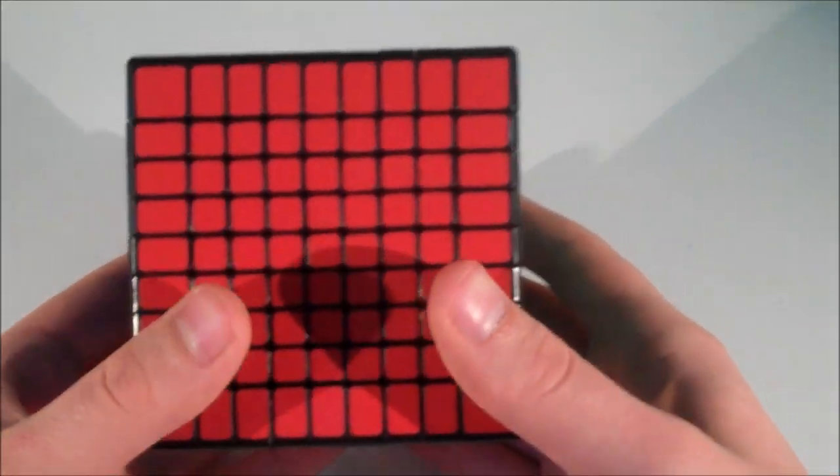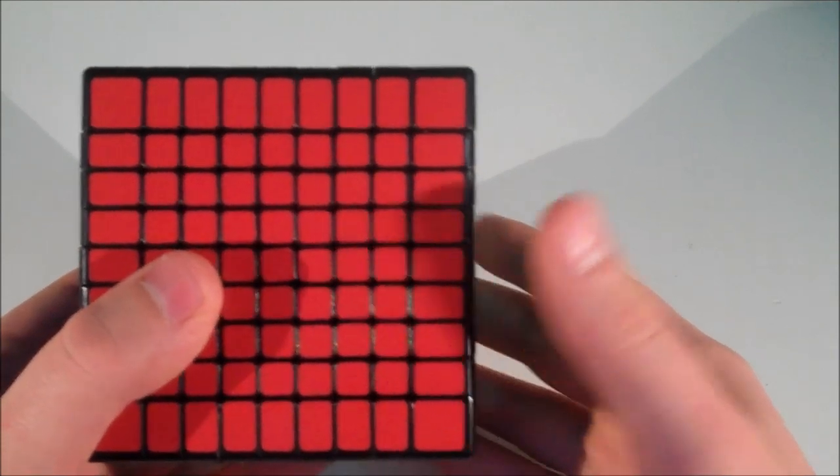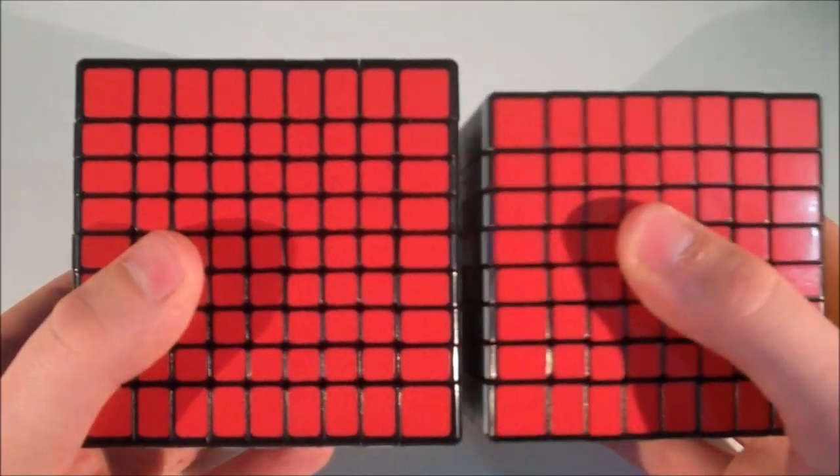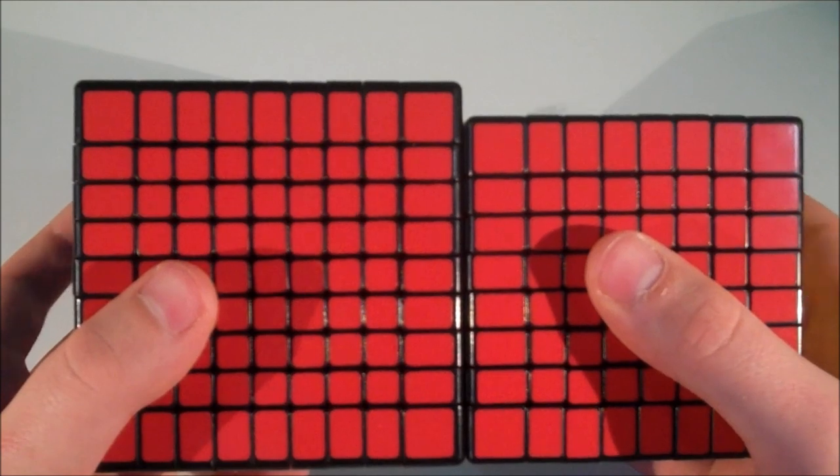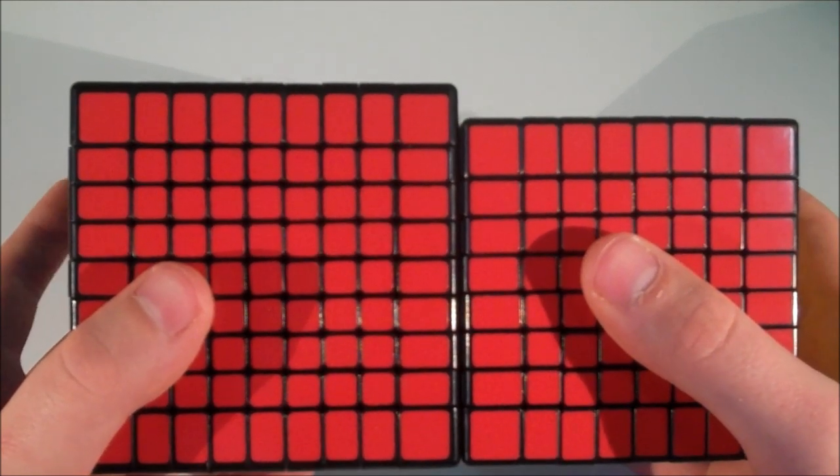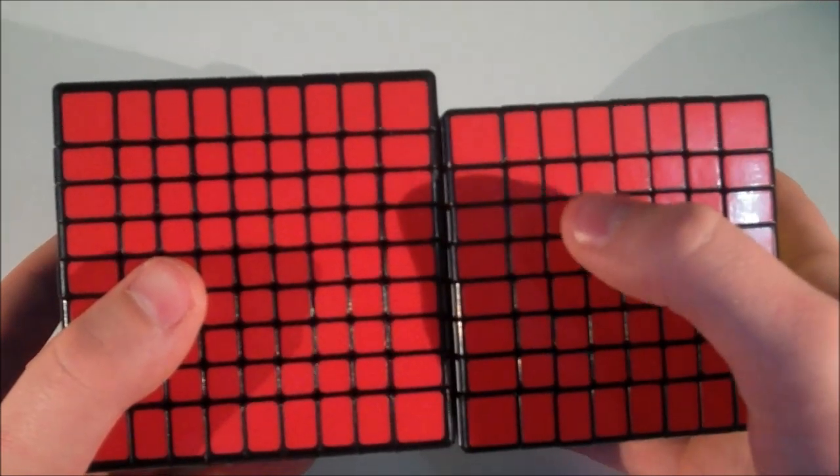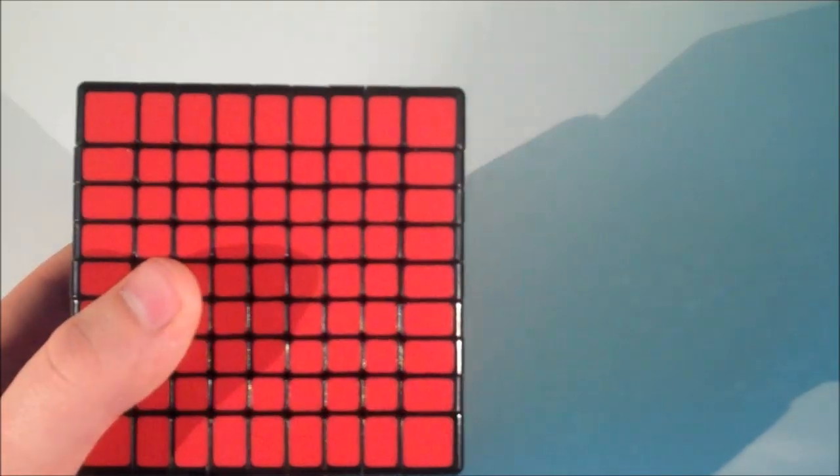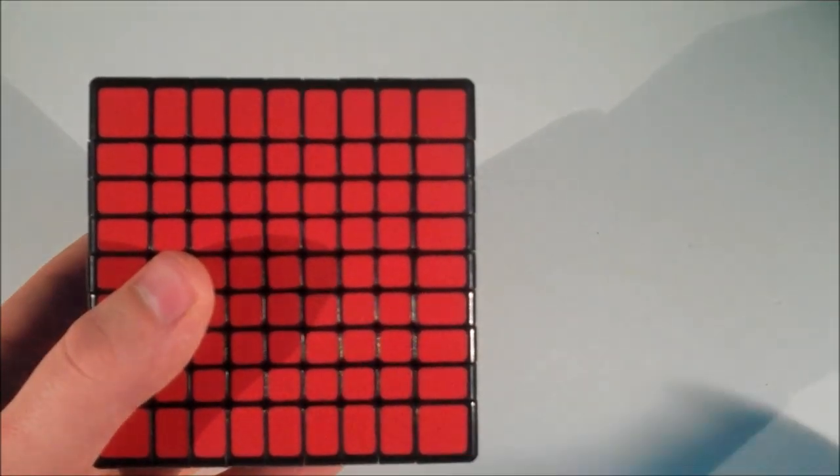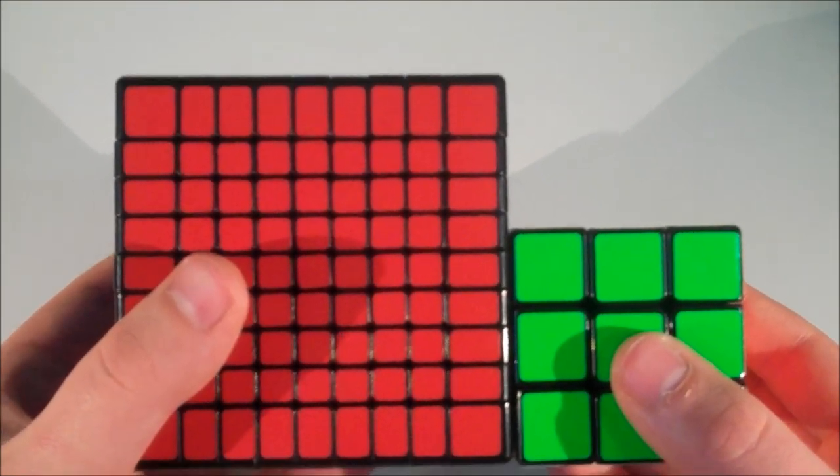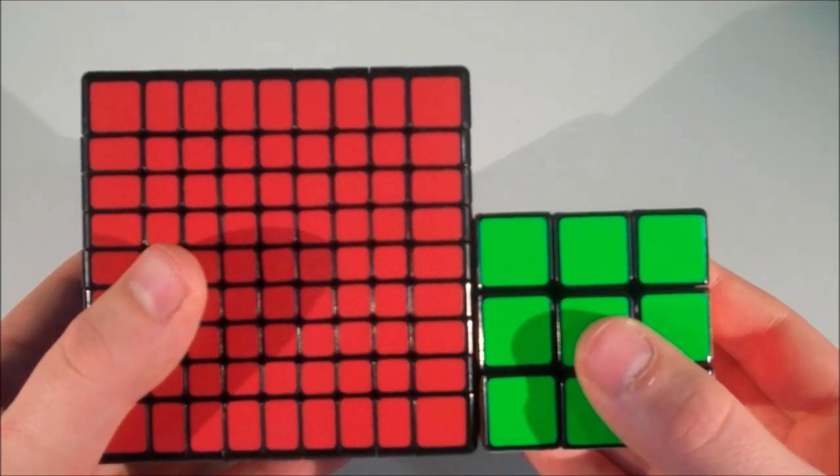So as I said, it is a pretty big cube. It is one layer taller than the 8x8. The pieces are the same size on the 8x8, so obviously because they're not proportional it doesn't look that way, but the cubies are exactly the same size. And compared to a 3x3, as you can see, it is a very big cube.